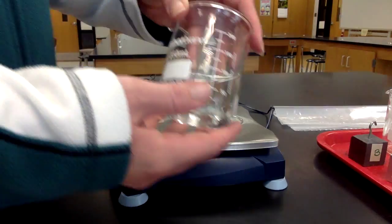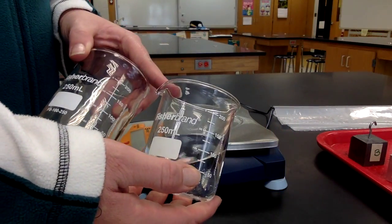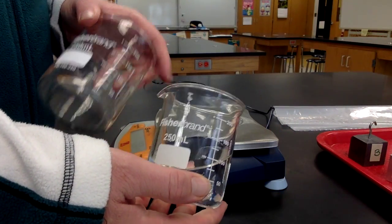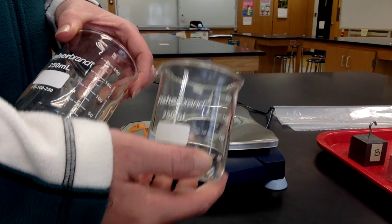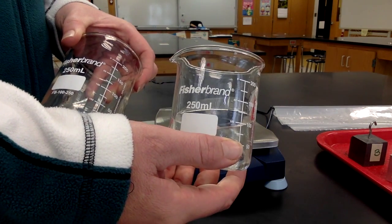To calculate the mass of the liquid only, you will subtract the mass of the container from the mass of the container with the water.